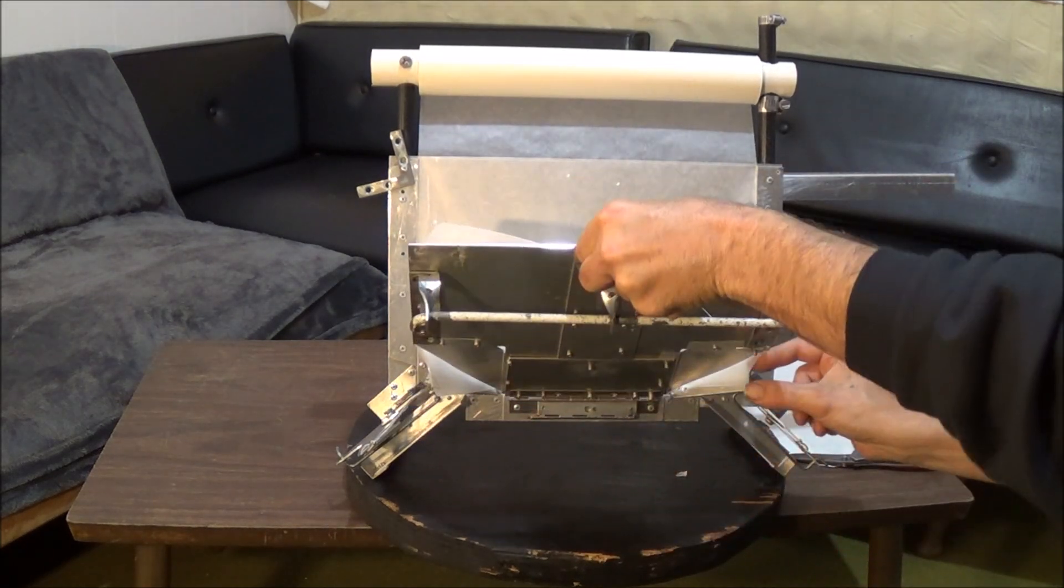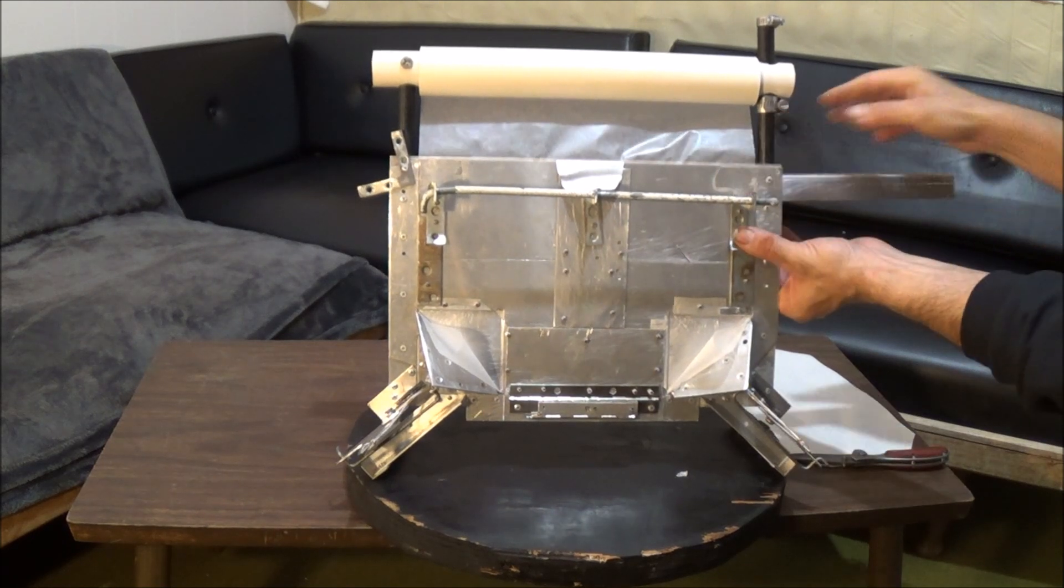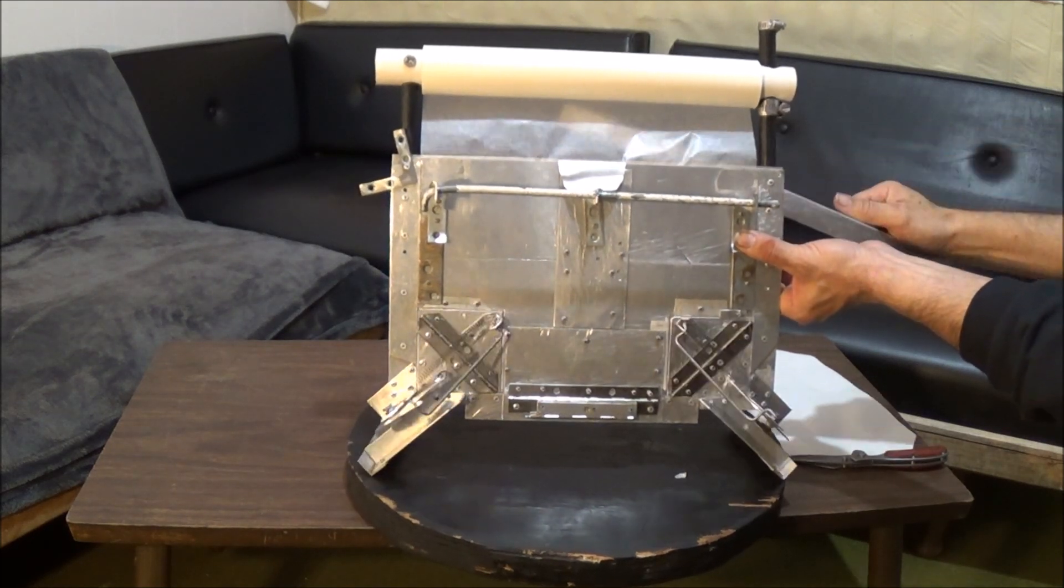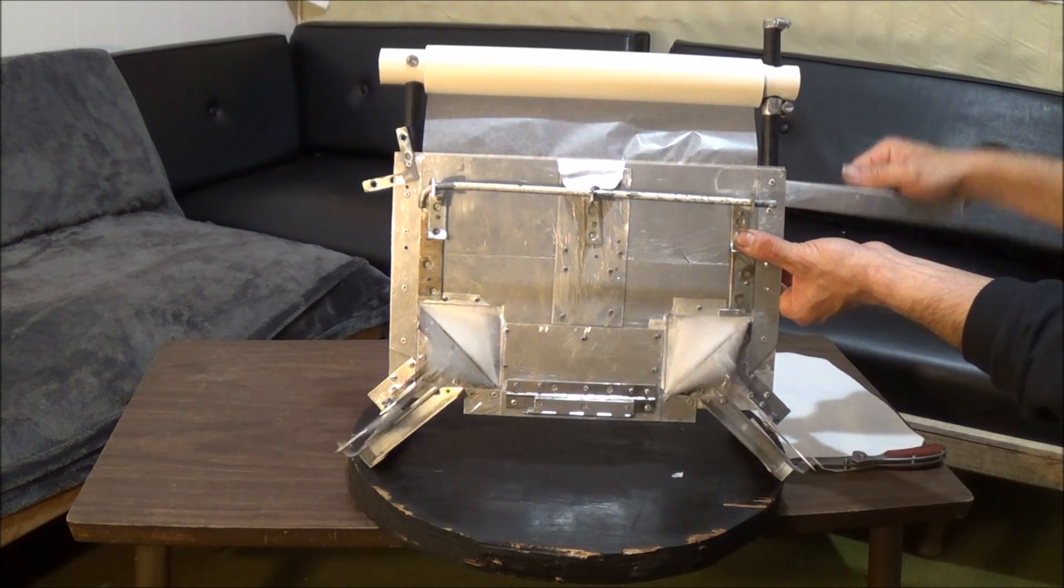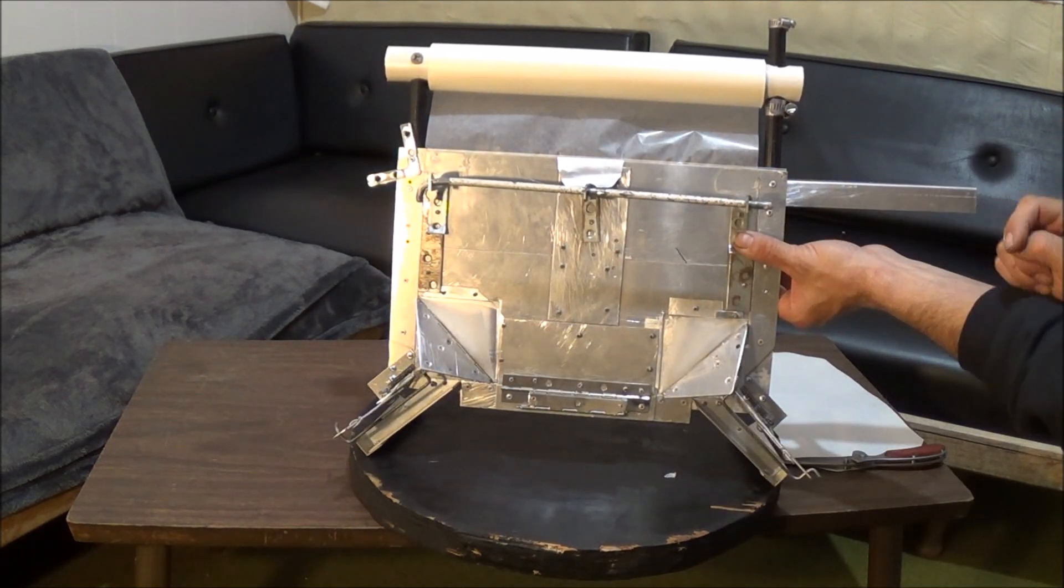Sometimes the edges of the wax paper kind of get bunched up right there, so you got to make sure they don't do that. Once the door is shut, you come over here. There's a lever. I'm going to just pull down on the lever. You'll notice those two little ears right here fold up. They fold the actual corners in our liner.